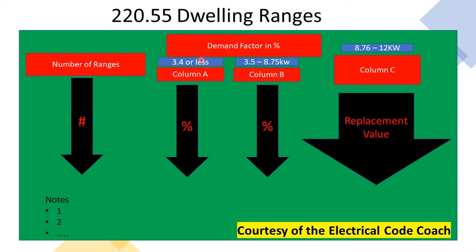Starting on the left-hand side in column A, this is when your individual range falls 3.4 KW or less. Column B is when the individual range falls between 3.5 and 8.75 KW. Then column C is when our ranges are 8.76 through 12 KW. In the bottom left-hand of the table, you're going to see some notes, and that's when we have a situation that doesn't fit into the normal table. We're going to take it piece by piece.